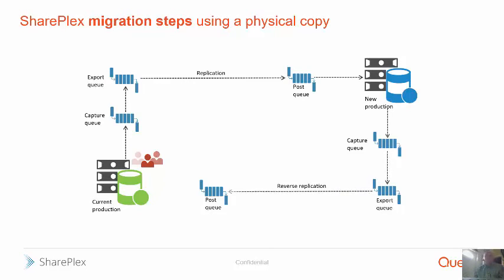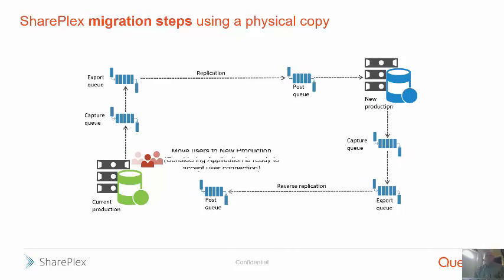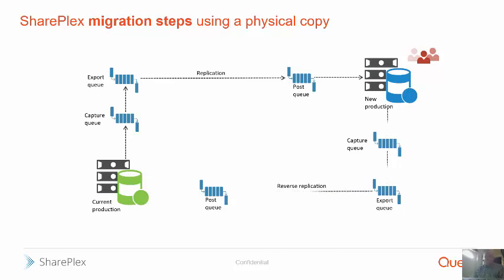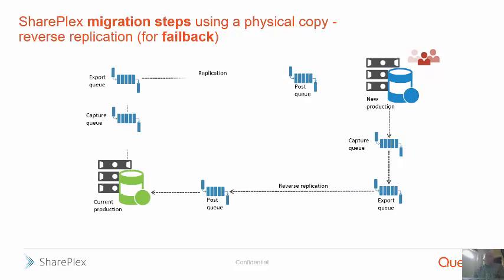It doesn't matter because your users are still over here — they've seen no downtime yet at all. Once you're ready to actually move the users, you set them up and move them. The move is simply changing DNS or telling people to log into a new system. You get your users over on the new system and you're up and running, replicating back to your old system in case you need it. If you have to fall back, you simply tell your users to move back to the old environment. No harm, no foul — you haven't lost any transactions. You've got all those transactions applied on the old system and you can try it again later.